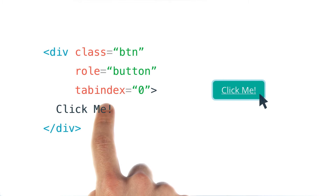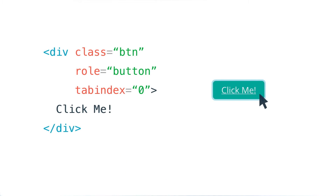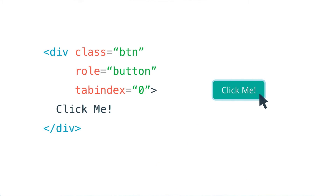Because I've added a tab index to this element, it means that regardless of how it gained focus that ring will always be displayed. And because I've used a focus pseudo-class style on it, that style will also be displayed regardless of whether this gained focus through a keyboard or a mouse.